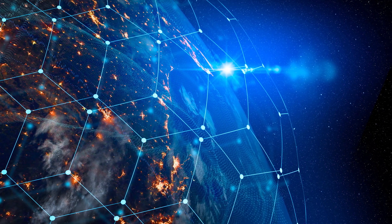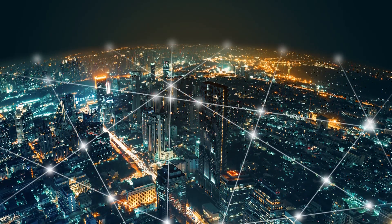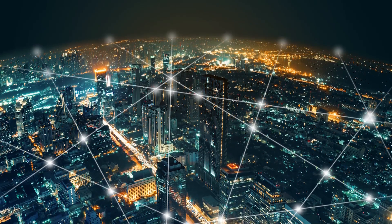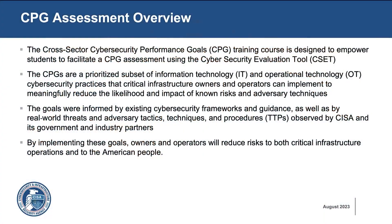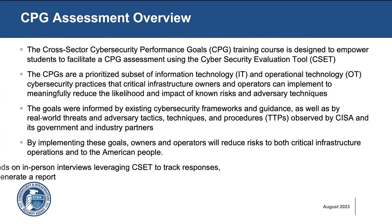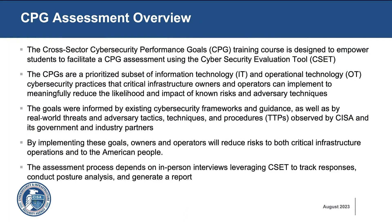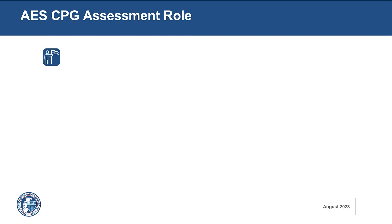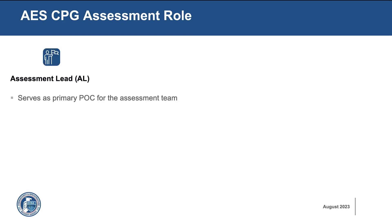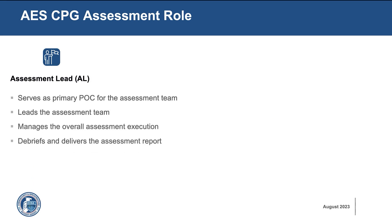By implementing these goals, owners and operators reduce risks to both critical infrastructure operations and to the American people. The assessment process depends on in-person interviews leveraging CSET to track responses, conduct posture analysis, and generate a report. The Assessment Lead role supports the CPG. These are the tasks and responsibilities of the AL for the CPG. Although all AL goals are the same, the individual activities change according to the assessment type.